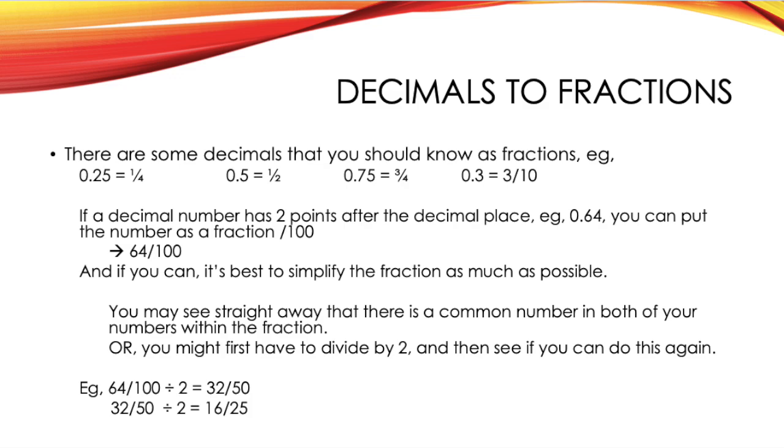In order to change a decimal number into a fraction, the first thing you need to do is look at how many decimal places there are after the decimal point. So, for example, here, you can see that 0.64 has two decimal places, which means that you can put this number as a fraction over 100. If there were three decimal places, you'd put it over 1,000.